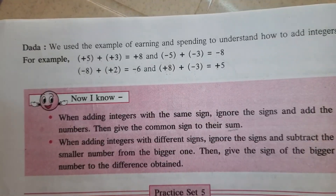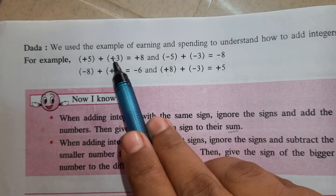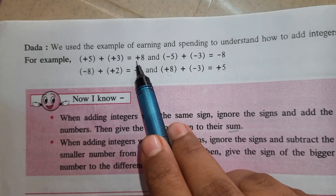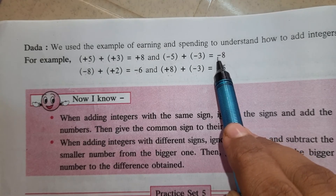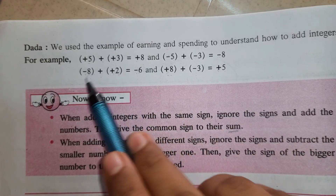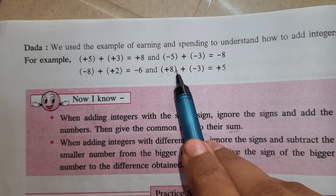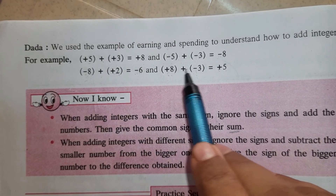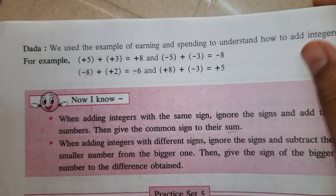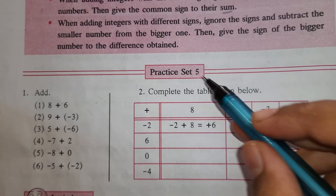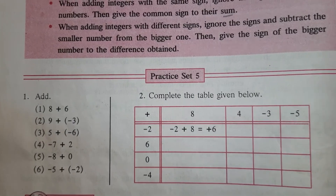One more time we will revise the rules. Same sign: add the numbers and give that sign. Same sign: add and give that sign. Different sign: subtract and give the bigger number's sign. Different sign: subtract and give the bigger number's sign. In the next lecture we are going to start with practice set 5. Thank you.